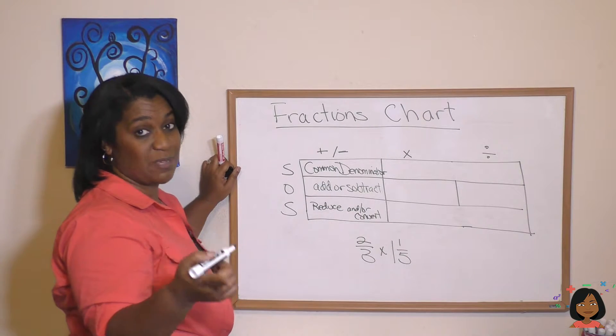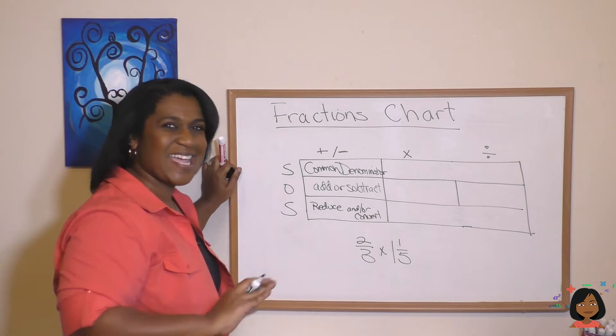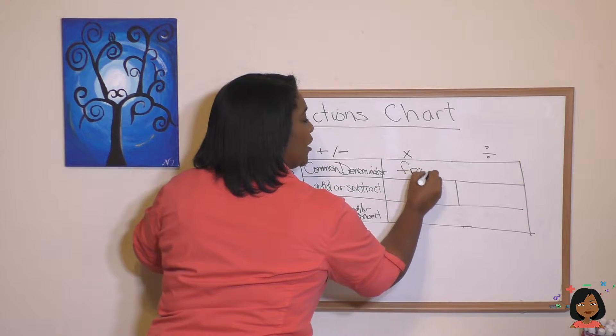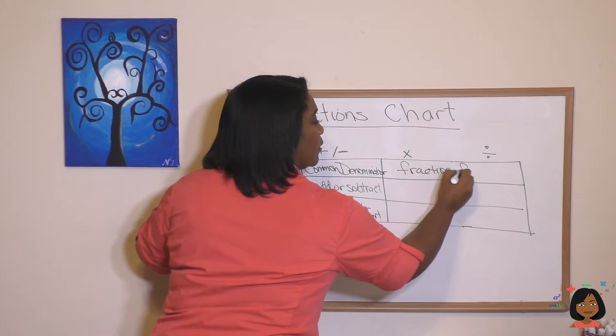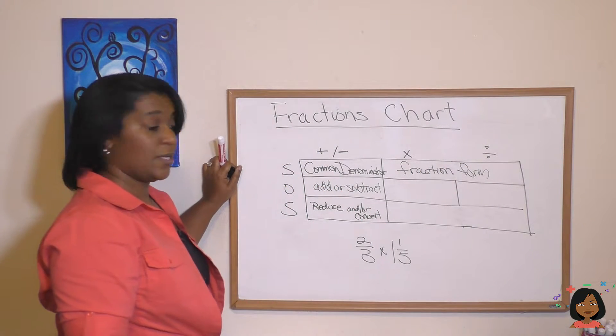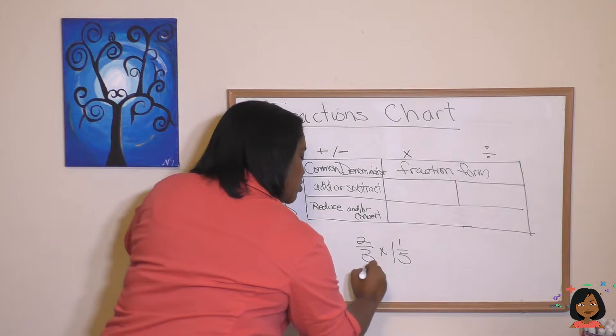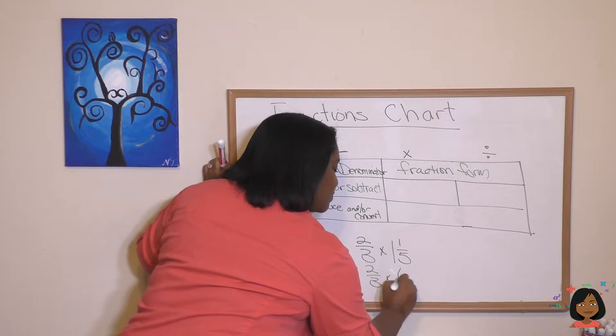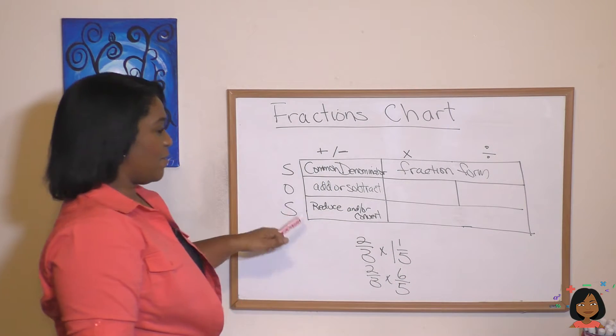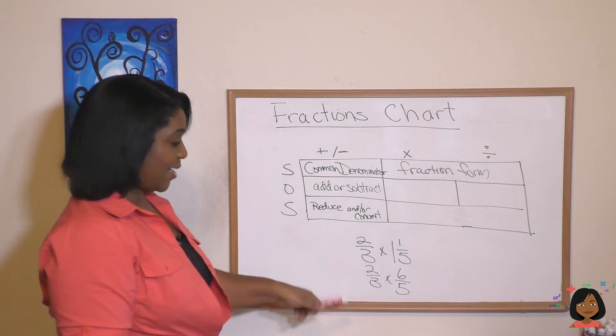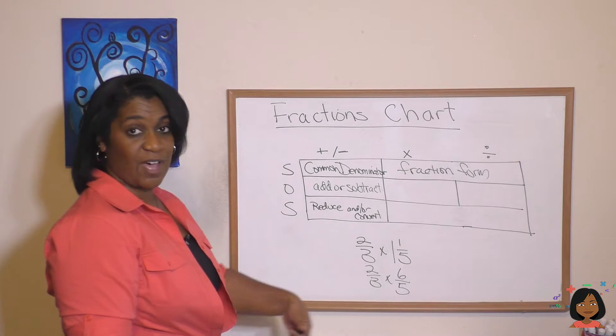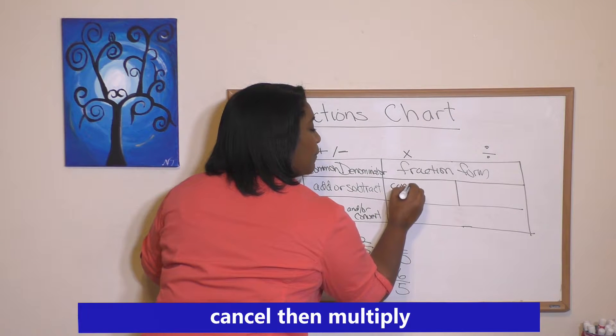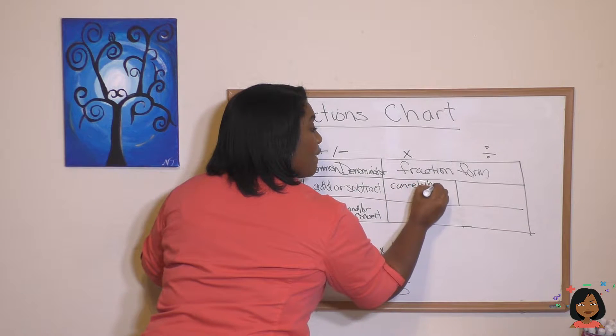And by the way, that also happens to be for division, right? If there's a division sign in here, I can't do anything with it until it's in an improper fraction form. So here we go, fraction form. Let's do that. This would be 2/3 times—5 times 1 is 5 plus 1 is 6—6/5. And now for multiplication I would just multiply across, right? 2 times 6 is 12 over 3 times 5. And if I could cancel first, I would cancel. So I'm going to say cancel, then multiply.